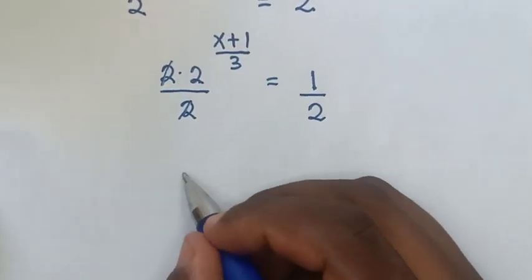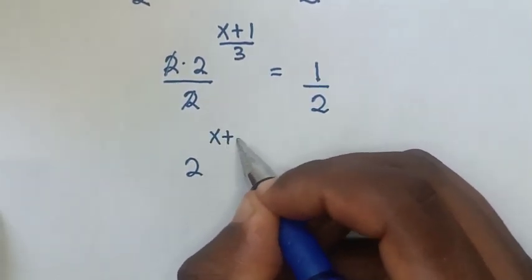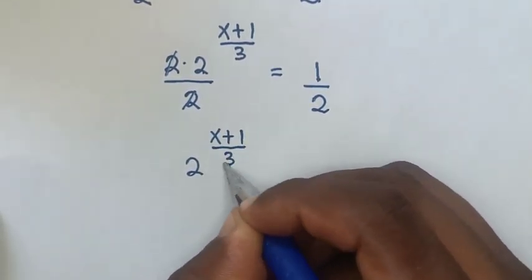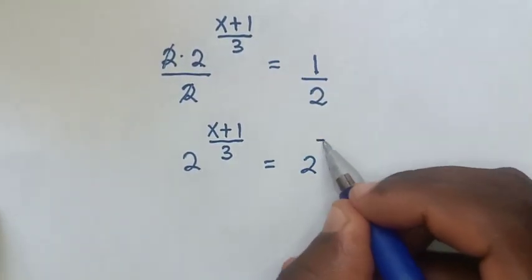then our equation will be 2 to the power of (x+1)/3 equals 1/2, which is the same as 2 to the power of -1.